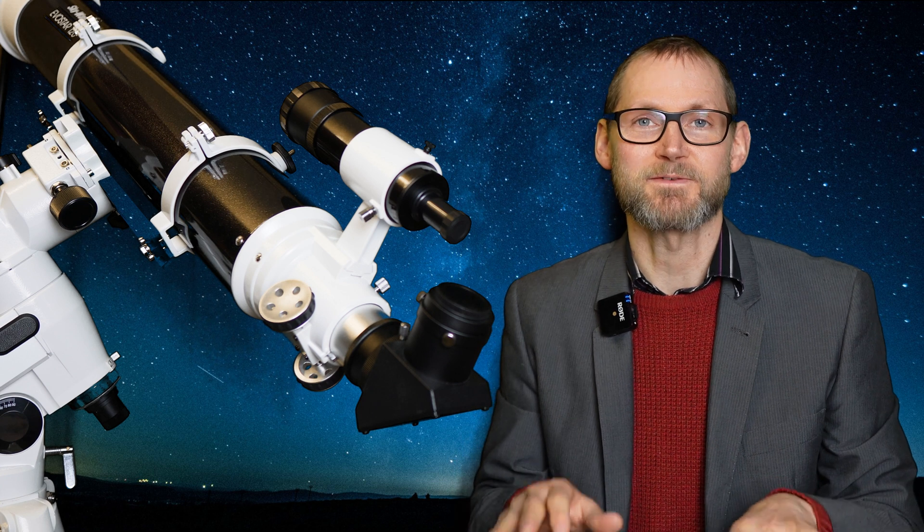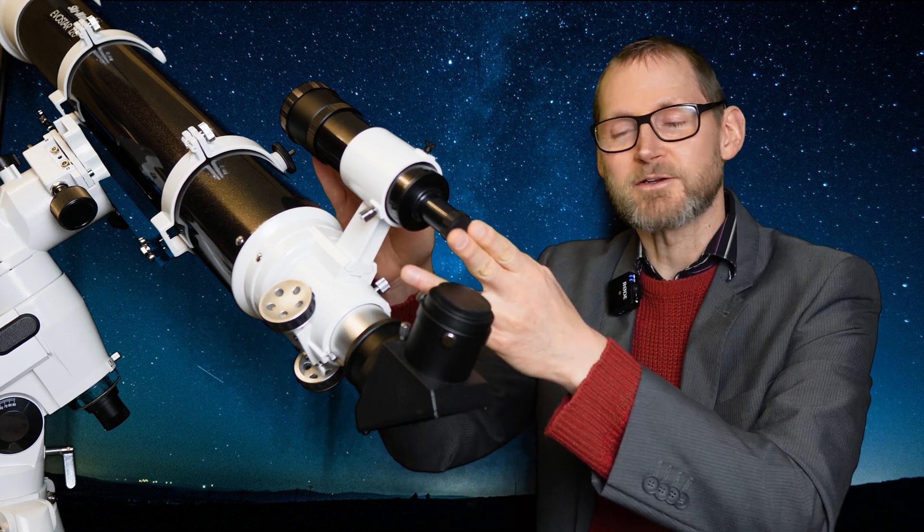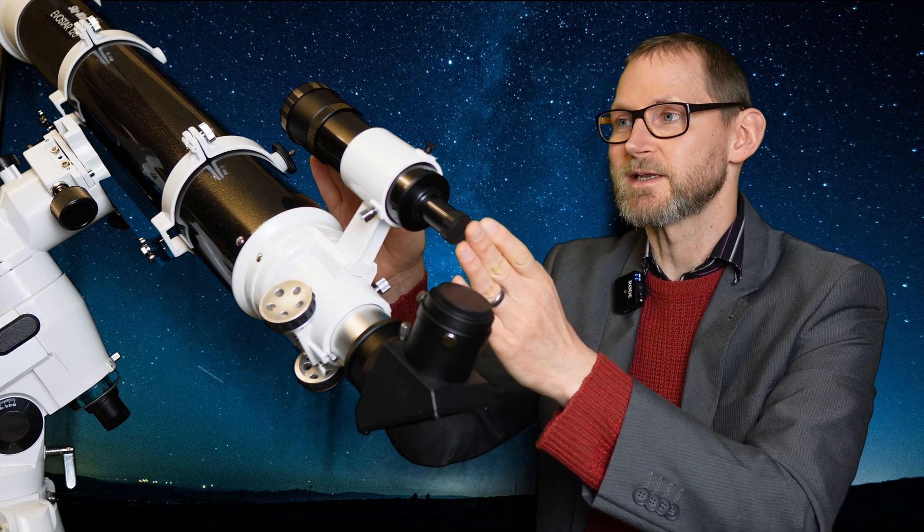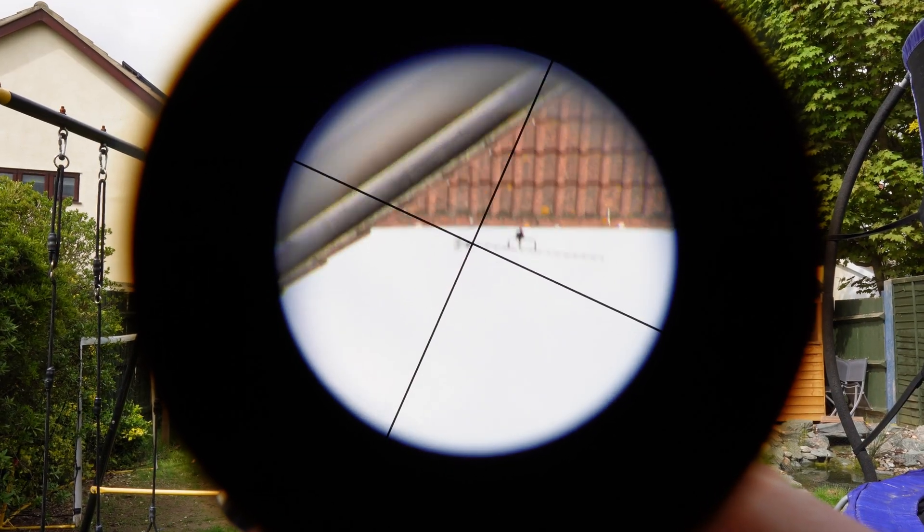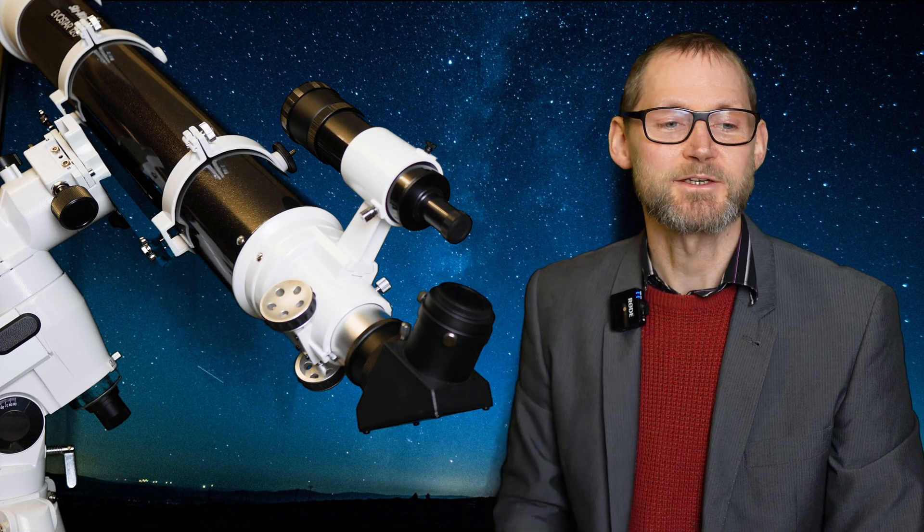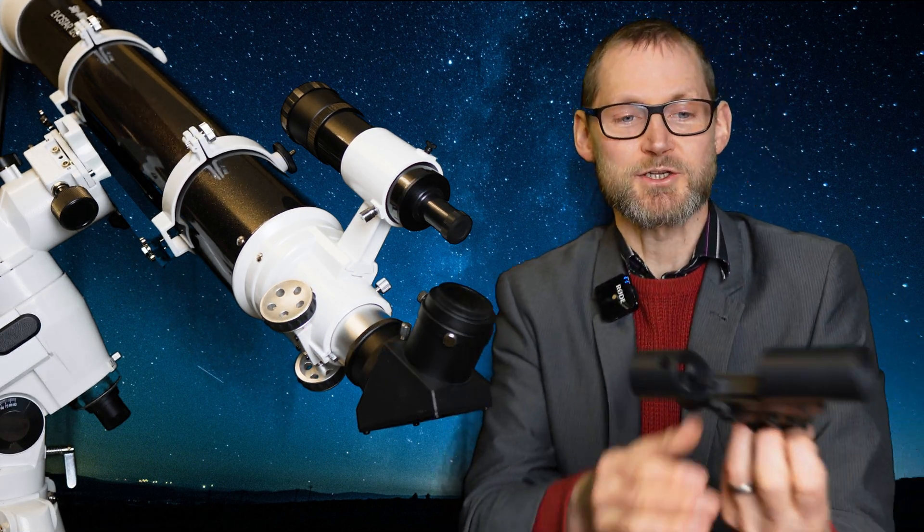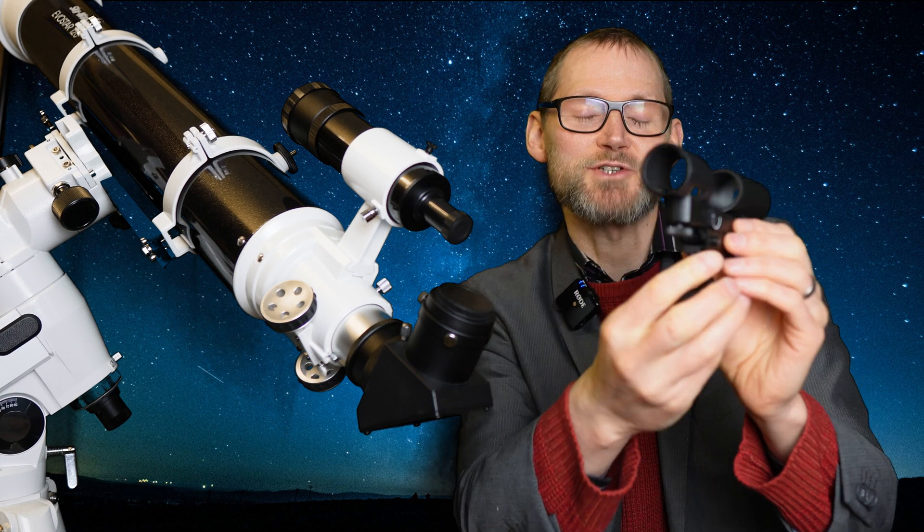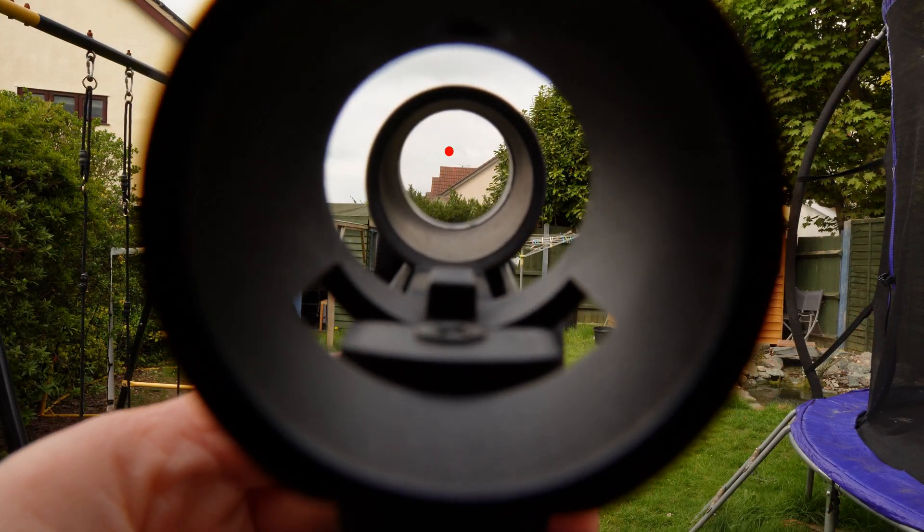Now there's two different types of finder. There's an optical finder scope like this one, this is an 8x50 meaning the objective lens is 50mm and it magnifies eight times, and you can also get a zero magnification what we call a red dot finder that simply projects a red dot onto the sky.